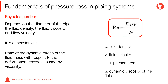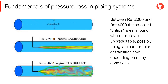The Reynolds number, a dimensionless number, is a characterization of the flow in a pipe. It depends on the diameter of the pipe, the fluid density, fluid viscosity, and flow velocity. It may be considered as the ratio of the dynamic forces of the fluid mass with respect to the deformation stresses caused by viscosity. For technical studies, the flow rate in pipes is considered laminar if the Reynolds number is less than 2000, and turbulent if the Reynolds number exceeds 4000. Between these two values, the so-called critical area is found, where the flow is unpredictable — possibly being laminar, turbulent, or transition flow, depending on many conditions.